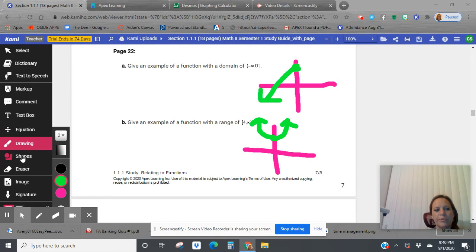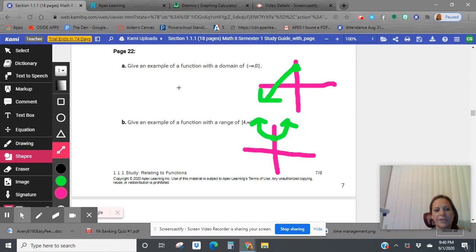Real quick, you could use the shapes line function and actually insert a line for a graph that is much prettier than the ones I drew earlier. Just to give you an idea, here's my x and y axis, and now I can go make a sketch.